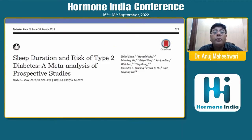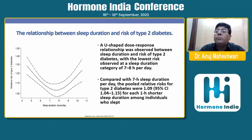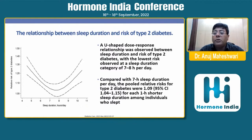A meta-analysis of prospective studies on sleep duration and risk of type 2 diabetes found a U-shaped dose-response relationship, with the lowest risk observed at a sleep duration of 7 to 8 hours per day. The pooled relative risk for type 2 diabetes is 1.09 (95% confidence interval: 1.04 to 1.15) for each one-hour shorter sleep duration among those who slept less than optimal. Seven to eight hours is the ideal sleep duration.